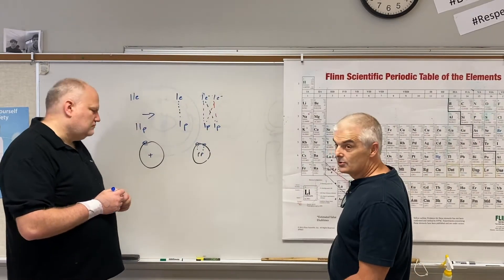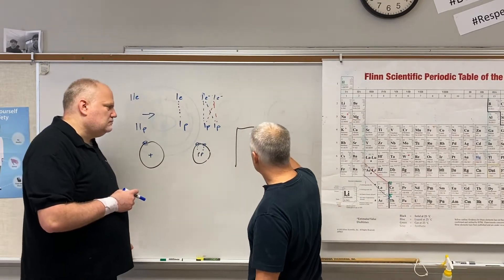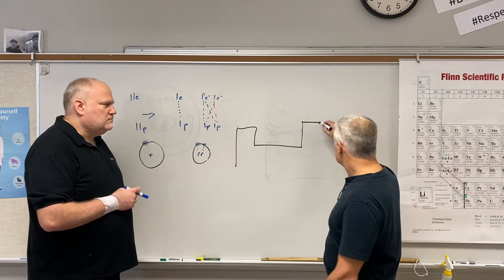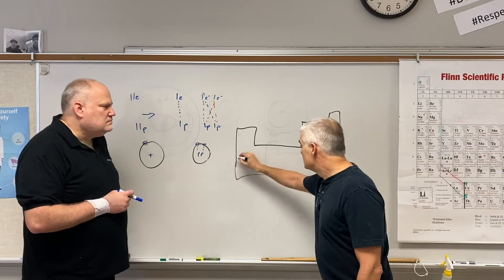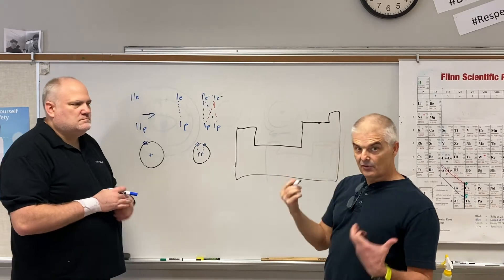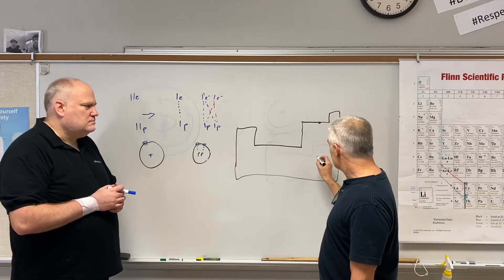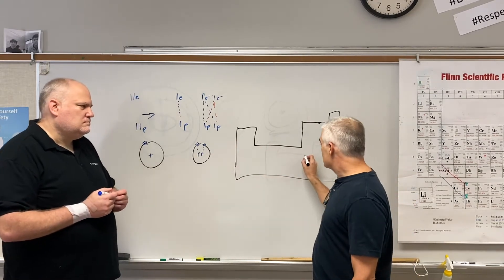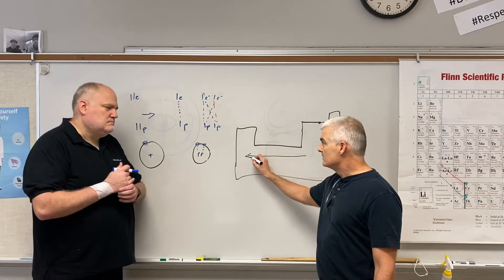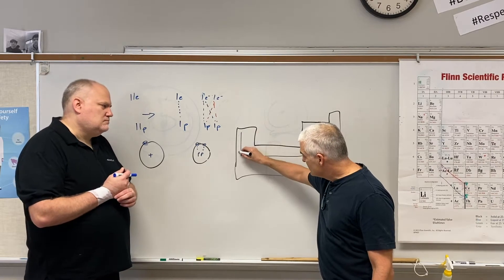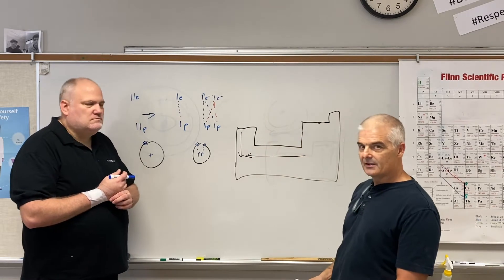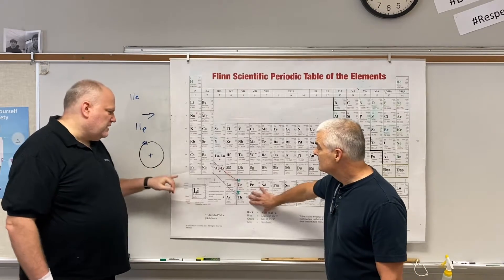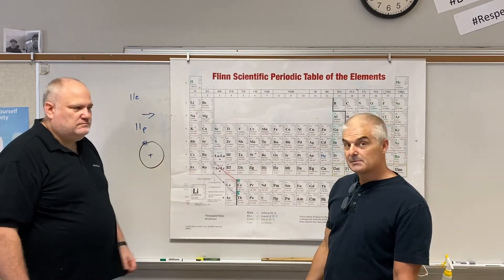What I'd like you to do in your notes is to sketch a periodic table. As you go across and up, atoms get smaller; as you go down, they get bigger. So who's going to be the biggest atom on the periodic table? That would be francium. Francium is the biggest atom.